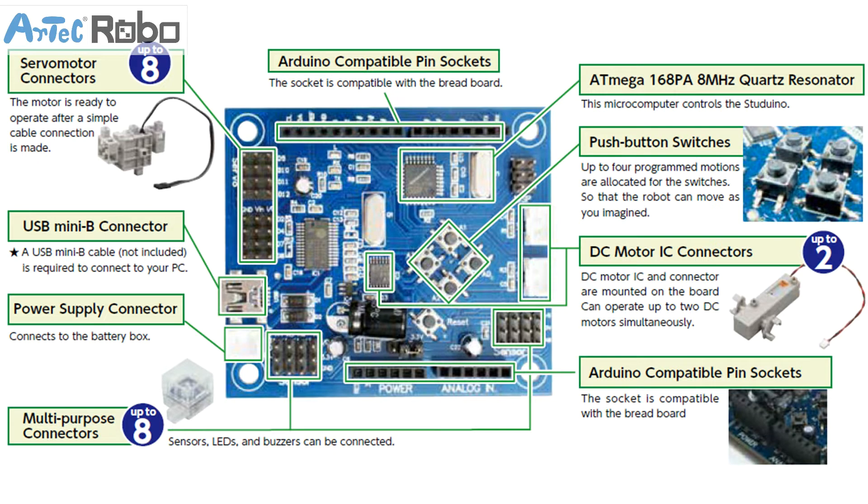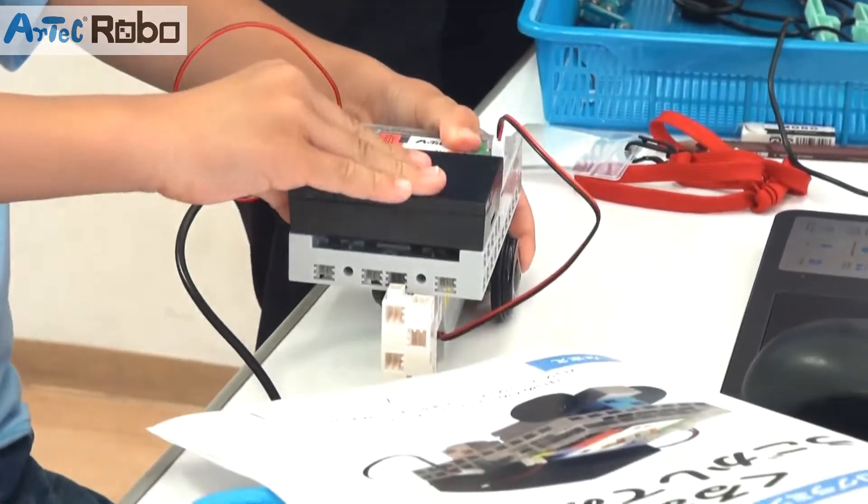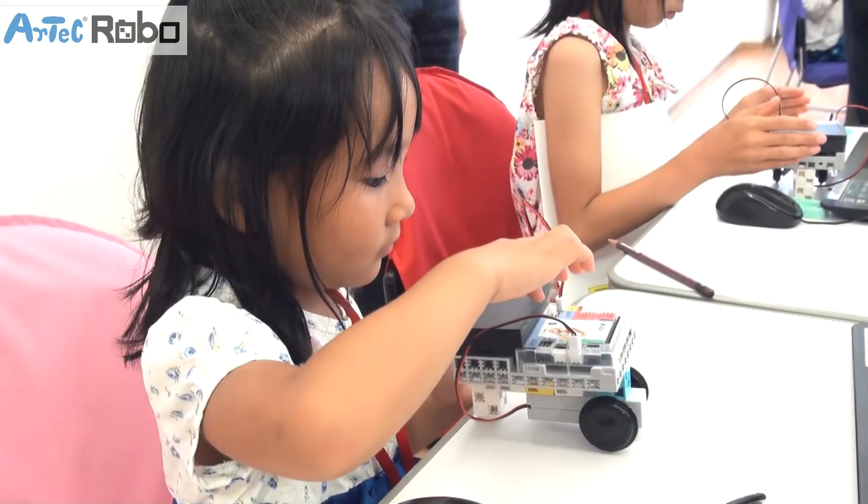With room for servo motors, DC motors, LEDs, buzzers, and sensors right on the board using pre-made connectors, there is no need for extra sockets or wiring to make a robot.